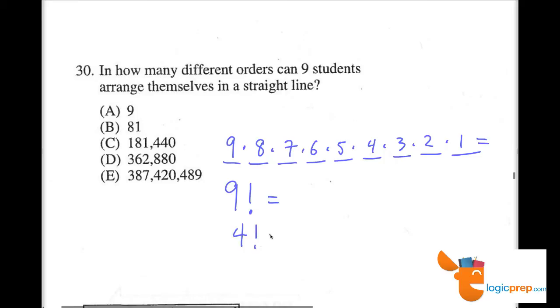Anytime we see the factorial sign, we know we're just going to multiply down 4 times 3 times 2 times 1 in this particular case. Or 9 factorial equals all of this.